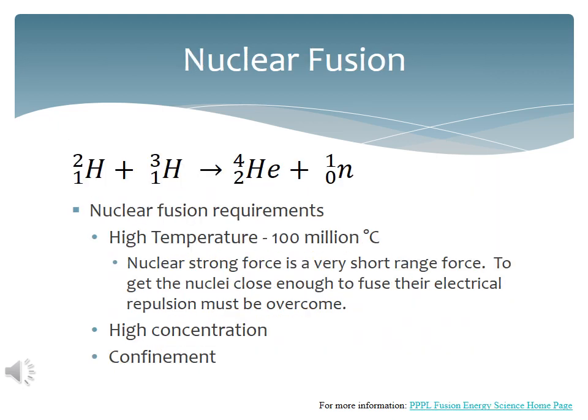At the atomic level, heat is motion. The higher the temperature, the faster the atoms are moving. If you can get the atoms moving fast enough, the electrical repulsion can't stop the collision, the nuclei will touch and fuse.